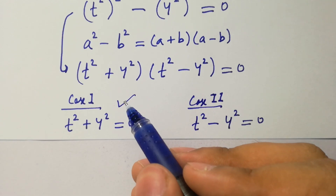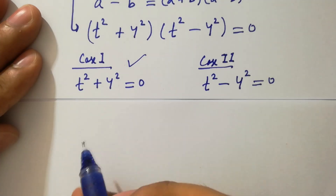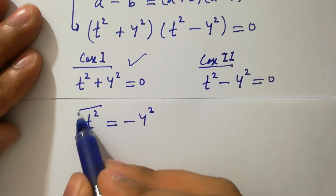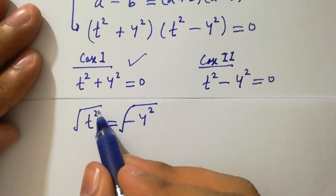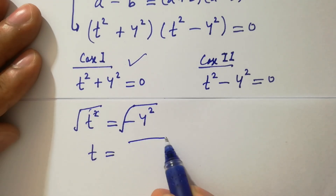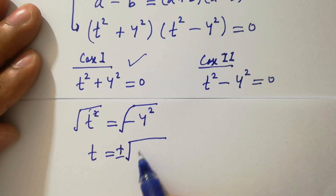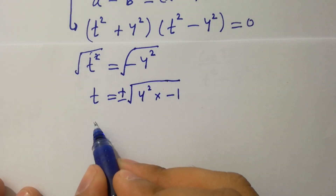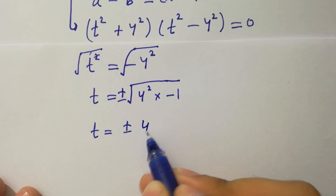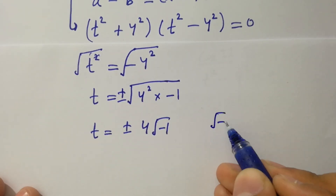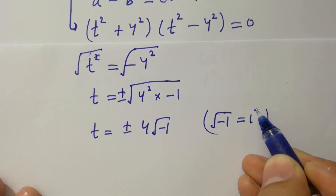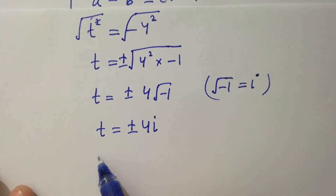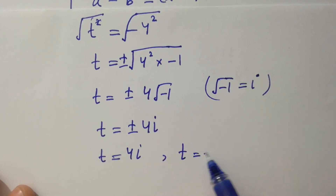Case one: t square plus 4 square equals 0, so t square equals minus 4 square. Taking the square root on both sides, we get t equals plus or minus square root of 4 square times minus 1. Since the square root of minus 1 equals i, we have t equals plus or minus 4i. So t equals 4i and t equals minus 4i.